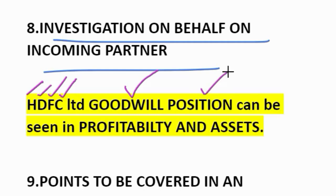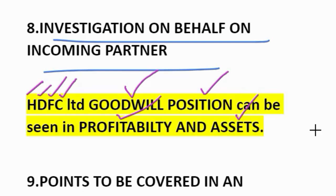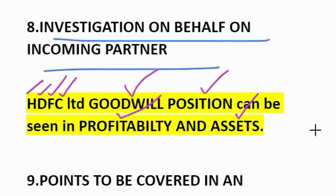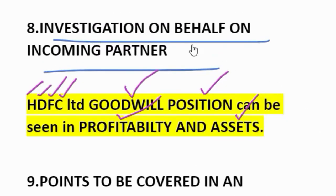Continuing investigation on behalf of incoming partner: Position — ascertain the position of orders at hand and the range and quality of line of business under which the firm is presently operating. Profitability — scrutiny of the record of profitability of the firm's business over a suitable number of years. Assets — examine the assets and liability position to determine the tangible assets, appraisal of the values of intangibles like goodwill, know-how, patents, etc., including contingent liabilities and those for pending tax assessment. These are the points under investigation on behalf of incoming partner.